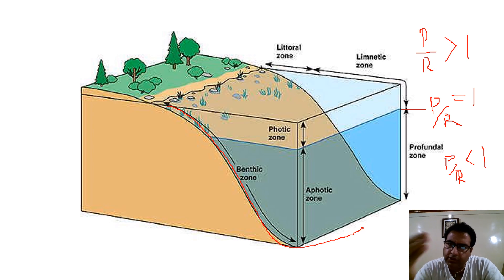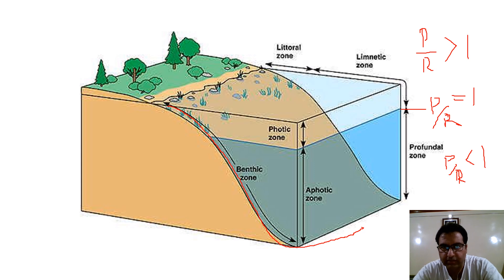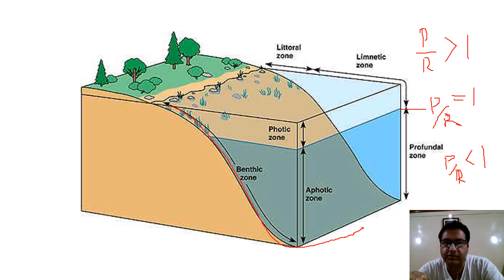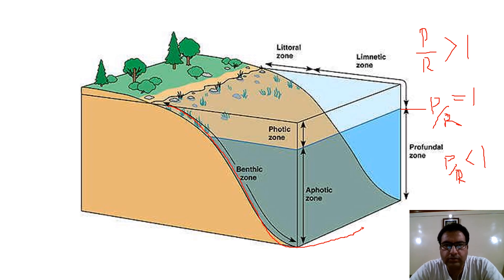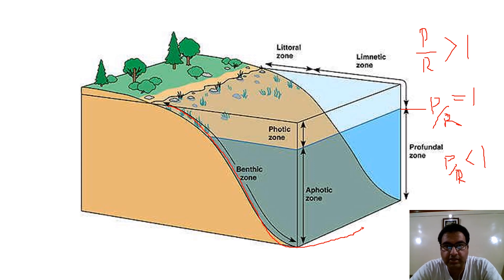Neuston organisms are categorized into two types: those that swim or are found above the surface are called epineuston, whereas those just below the surface are called hyponeuston. We also have periphyton — organisms attached to submerged surfaces — which are also present in the lentic ecosystem.